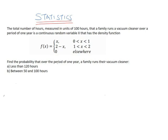What we are to do now is to find the probability over the period of one year the family runs their vacuum cleaner for less than 120 hours, and in the part B of the question, for between 50 to 100 hours.